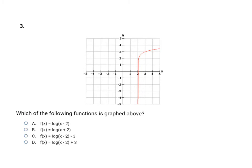Here is a logarithmic graph and they want us to match the appropriate equation to it. It has a vertical asymptote at x equals two — the graph gets closer and closer to that line but never touches it. So I'm going to have a minus two in parentheses, which lets me rule out B. My graph has been shifted over two to the right — that's the minus two in parentheses — and it's also been shifted up three, so there's a plus three at the end. That makes my answer D.